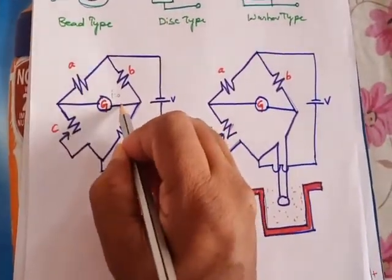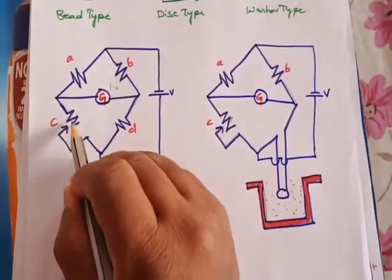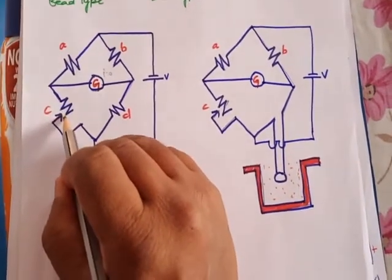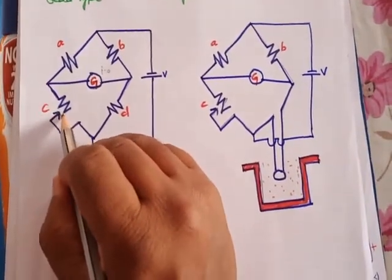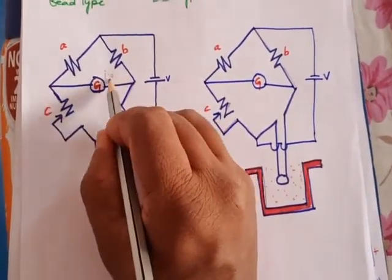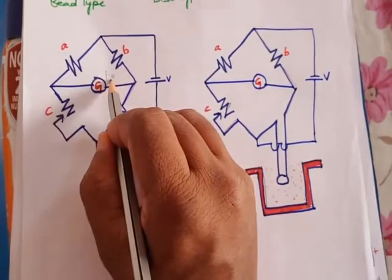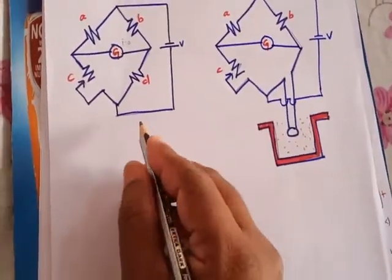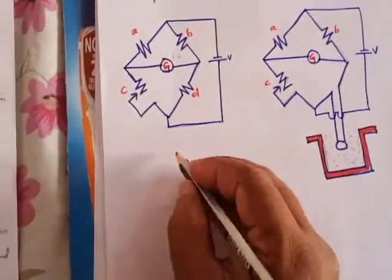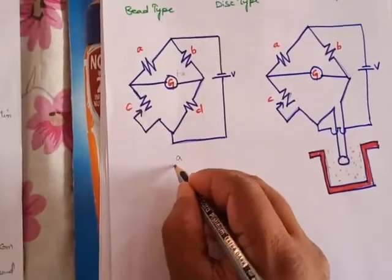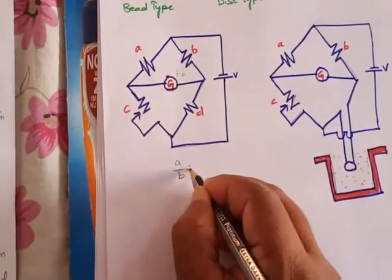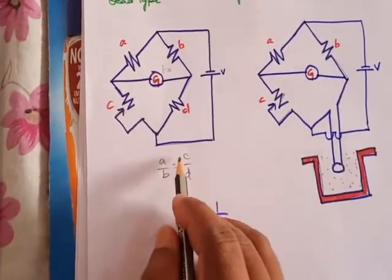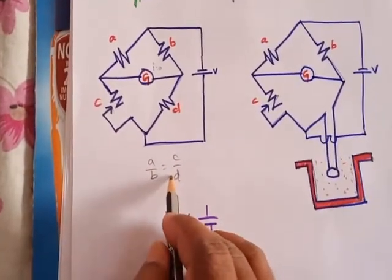For that condition, we have to adjust the value of the adjustable resistor C in such a way that the current shows zero deflection. At that condition, the bridge is said to be balanced. Then the equation can be written as A by B equals C by D.